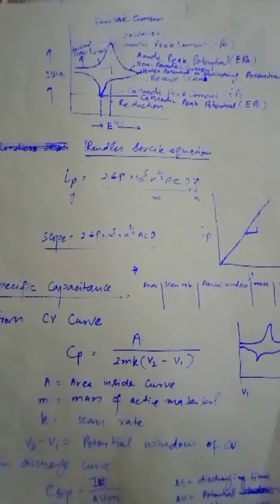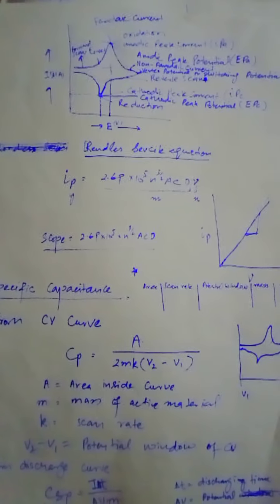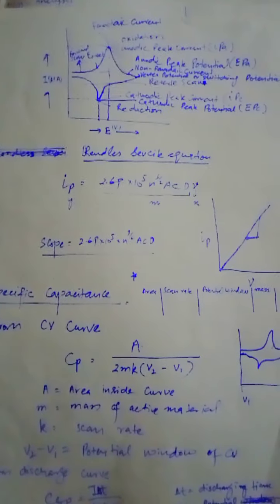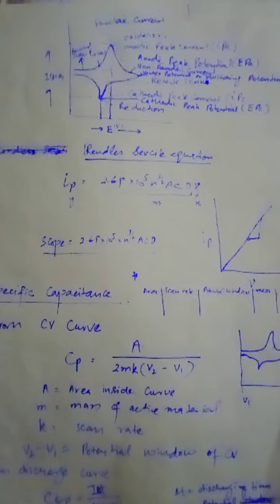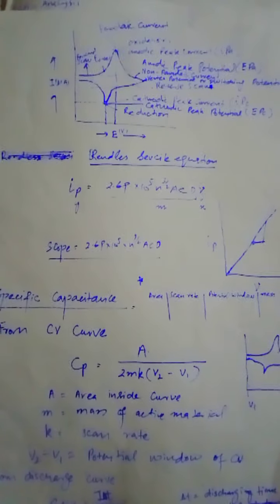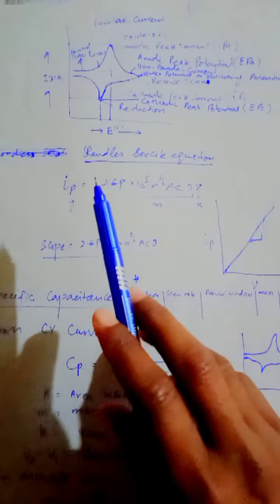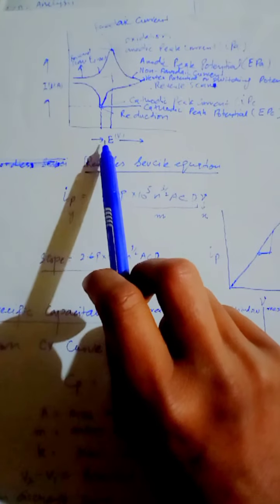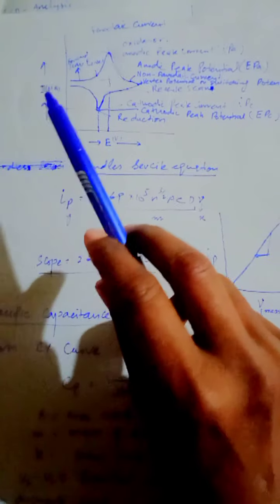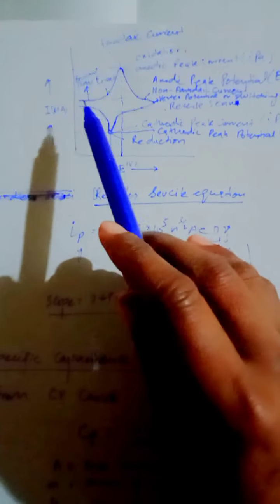As you know, we were talking about the cyclic voltammogram. In several voltammograms we have discussed the graph between the applied potential and the current. So now I am going to summarize this voltammogram.